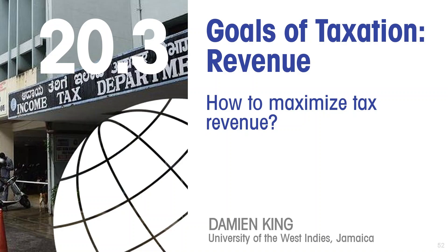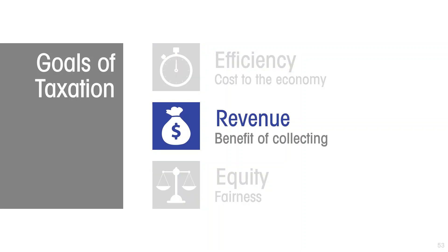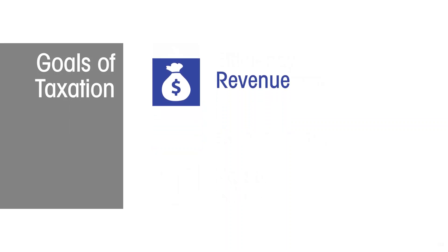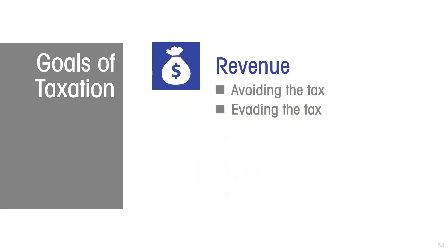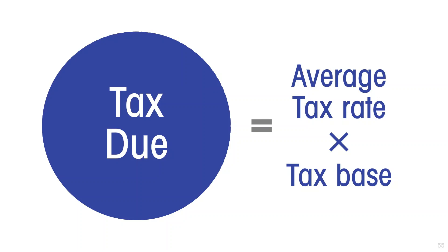This lesson is about the revenue goal of taxation. There are generally three goals of taxation: efficiency, revenue, and equity. Revenue is clearly one of the primary goals of levying taxation. There are two aspects of the objective of achieving revenue that need to be taken into account: avoiding the tax and evading the tax. The amount of tax due from any tax levied is the product of the average tax rate and the tax base.